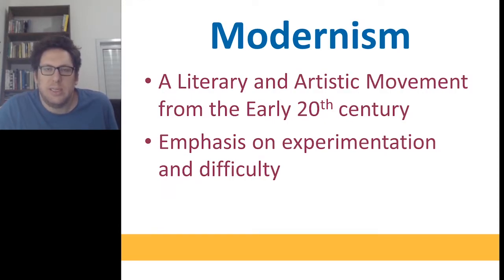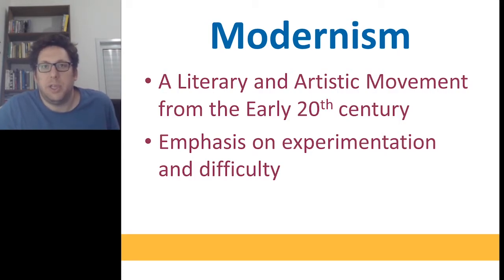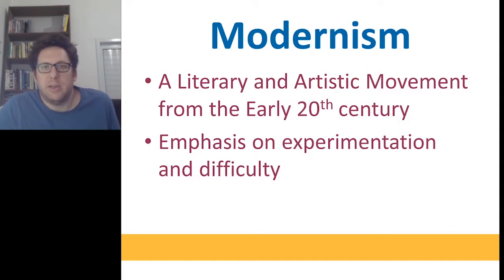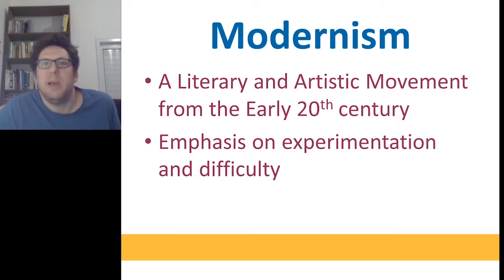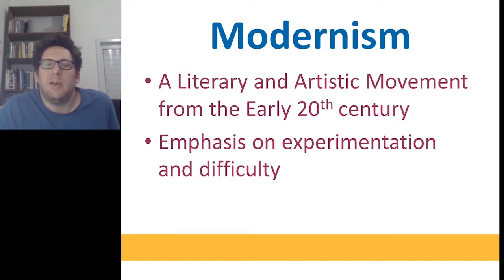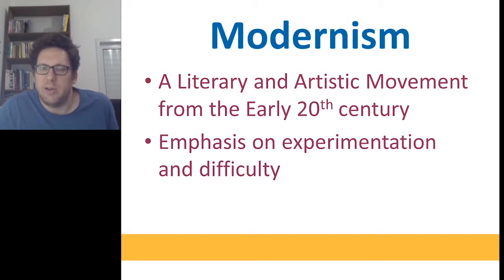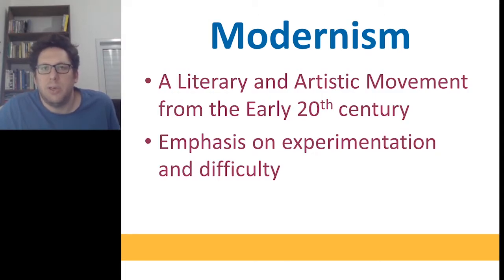What is modernism? Modernism is a literary and generally artistic movement — modernist painting, modernist dance — a movement from the early part of the 20th century, so it's about 100 years old now. And it's all about bringing art into the modern world.